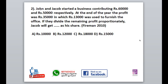We will now answer a business-to-date question. John and Jacob started a business contributing $60,000 and $40,000. Of the profit, $13,000 was used to furnish the office, and the rest of the profit of $35,000 was given to Jacob.